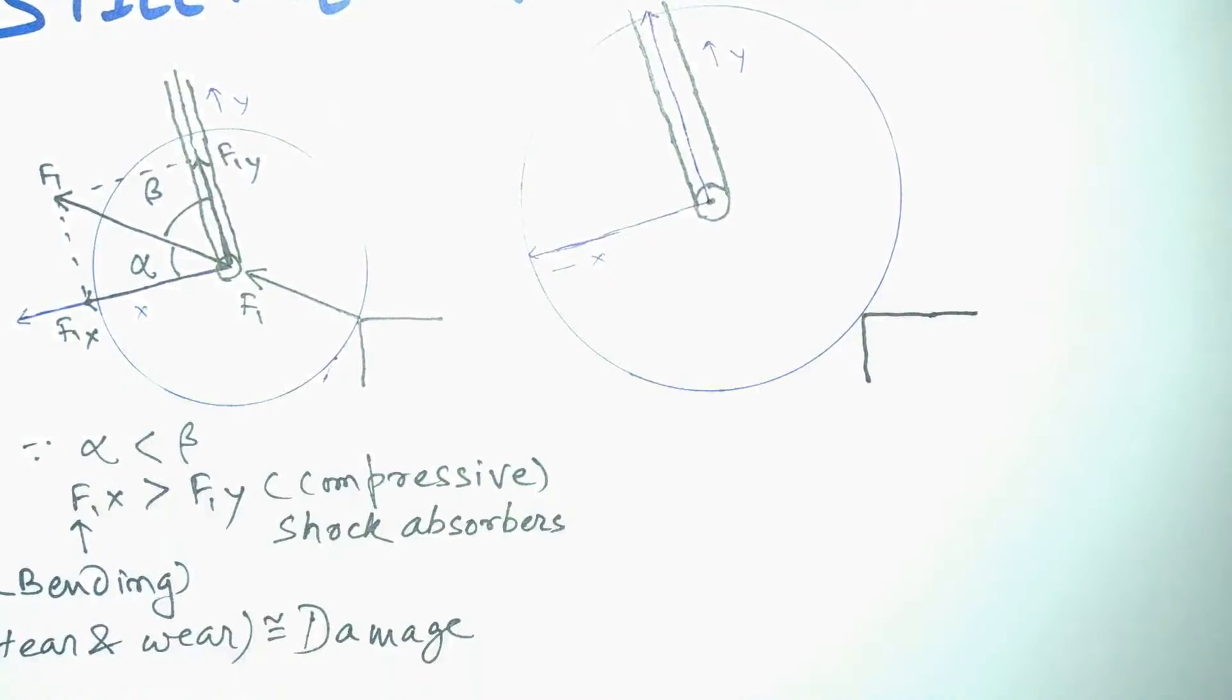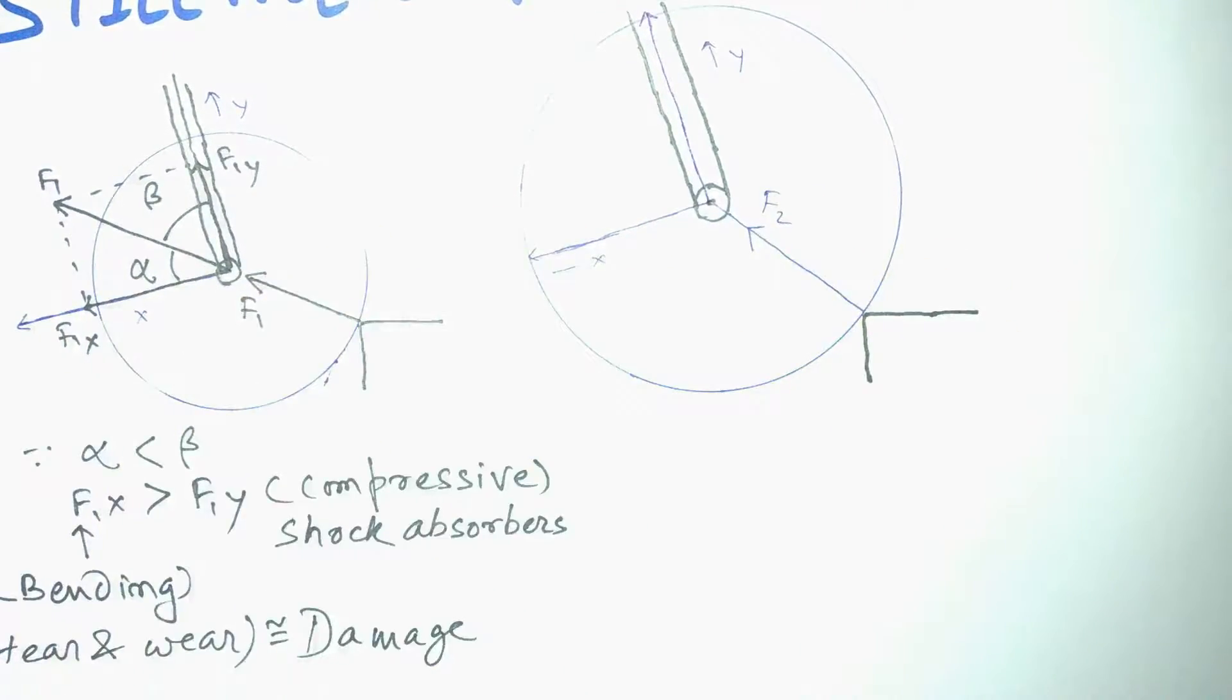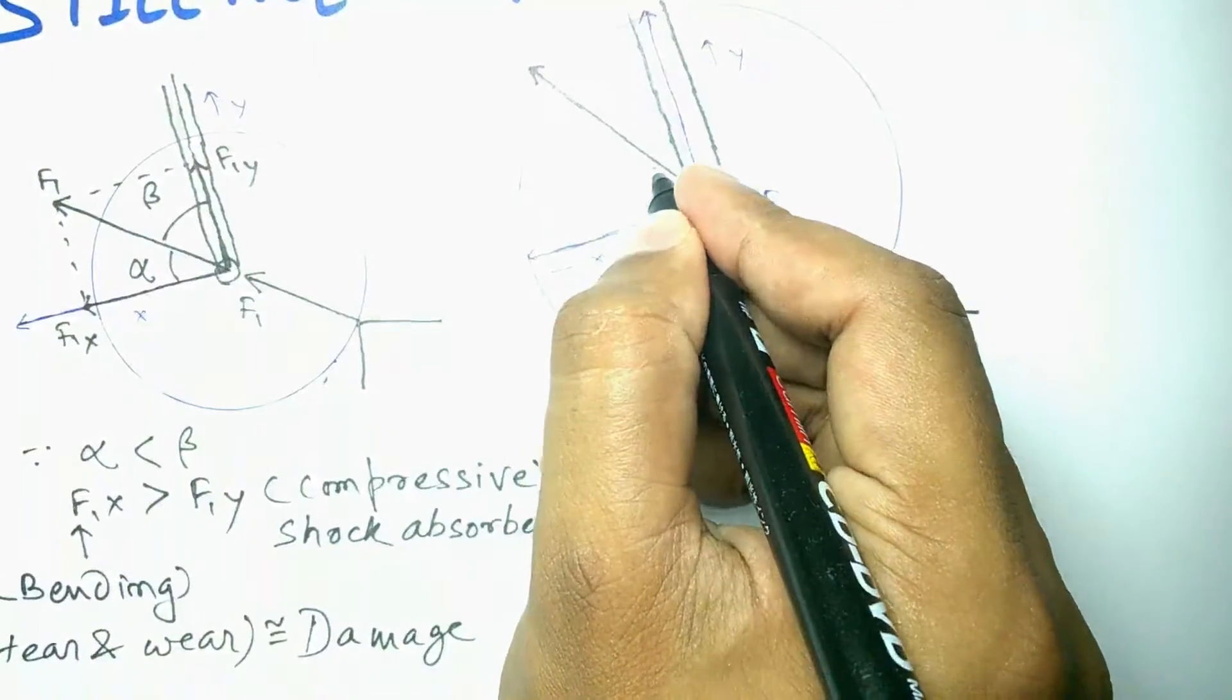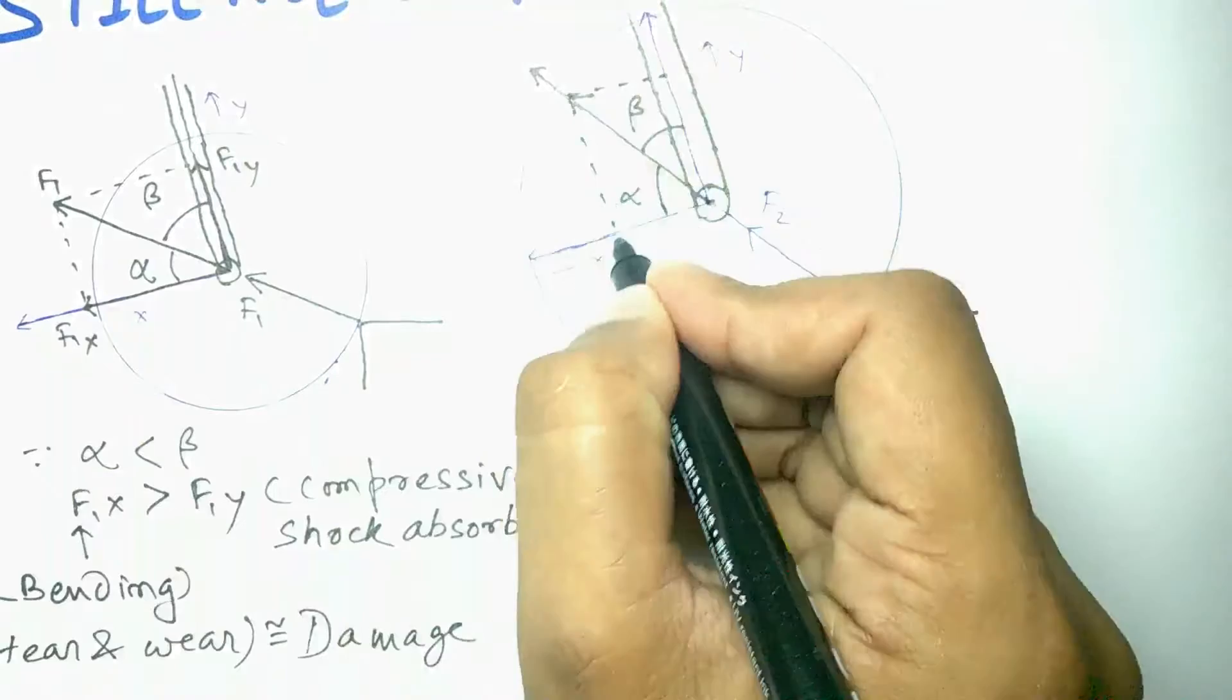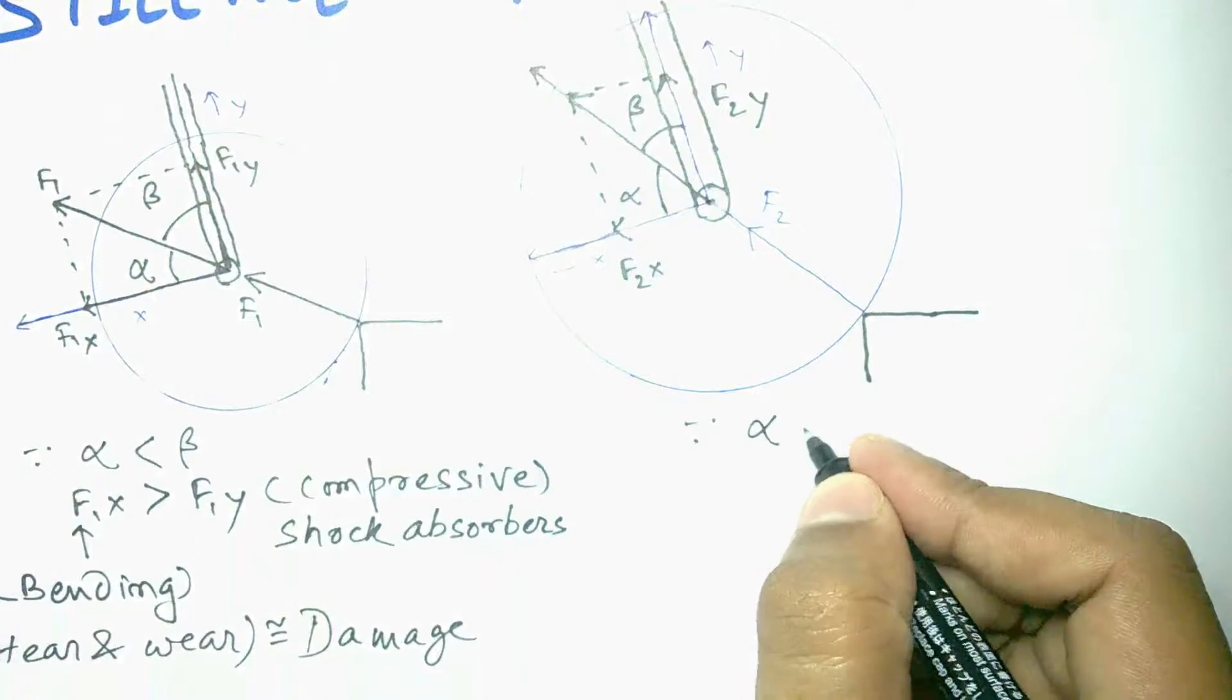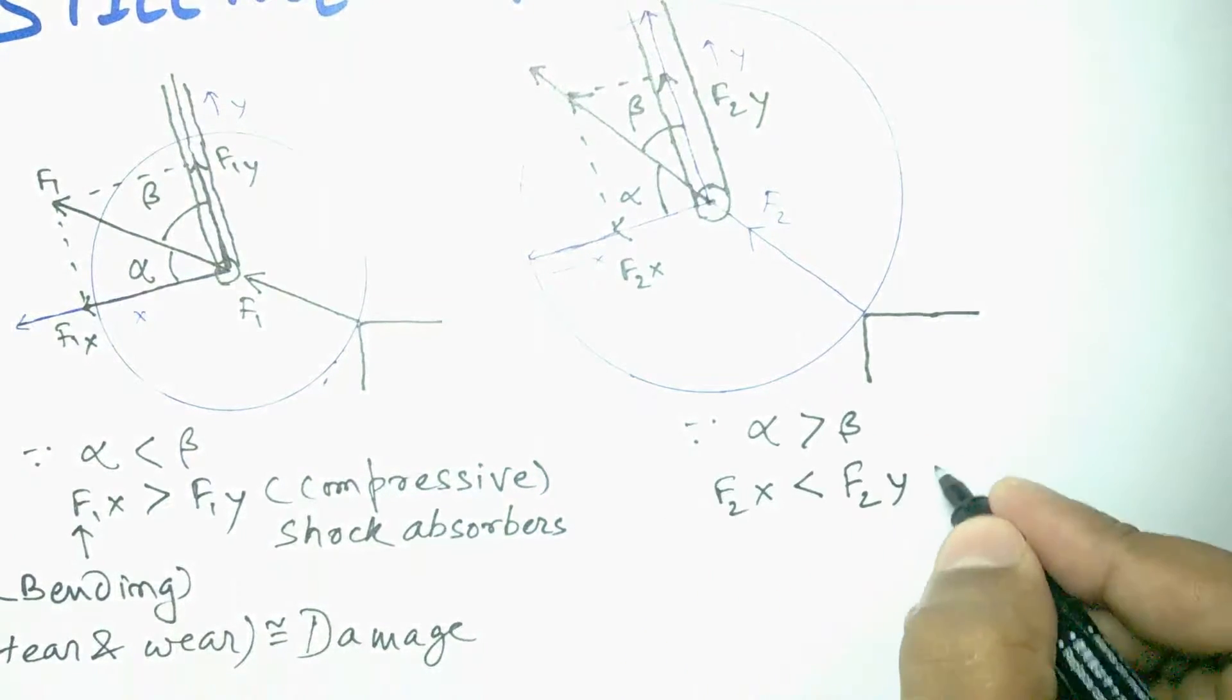The radial force acting on the wheel because of the obstacle is F2, which we already know is smaller than F1, making an angle alpha with the x and beta with the y-axis. Again we can take the components of the force along x and y axes. We can clearly see that alpha in this case is bigger than beta, making the x component smaller than the y component.